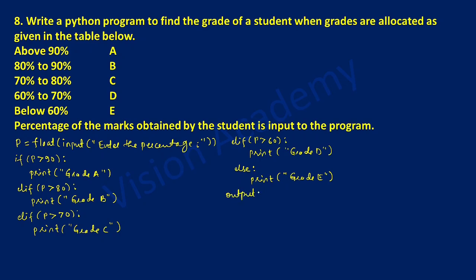Let us check out its output. Once we execute this program it will ask the user to enter the percentage. For example I am going to type 90 and press enter. What will happen if P is 90? 90 is greater than 90 — no, condition is false. So grade A will not be printed. Control jumps to the next condition. Here P is 90, and 90 is greater than 80 — yes, condition is true. Then it is going to print grade B.